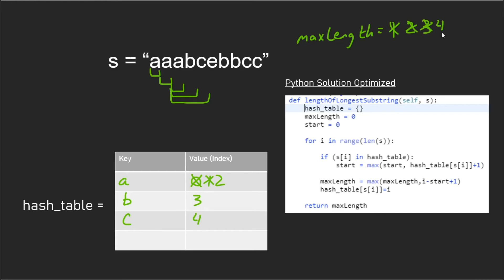Then we look at 'e' — not in the hash table — so we increment max length to four and add 'e' at index five. That's the new sliding window. Then we look at 'b', which is already in the hash table, so we have to calculate a new start. The new start is one element over from where the last 'b' was found, making the new window 'ceb'. Max length is only three for this window, so the four value stays.